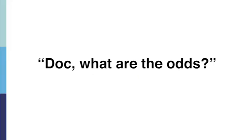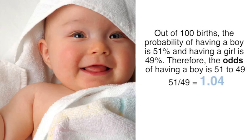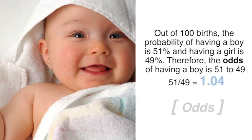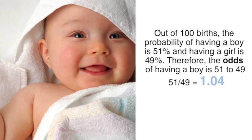You might have also heard of the term odds before. For example, you might ask the doctor: what are the odds of having a baby boy? Out of 100 births, the probability of having a boy is 51%, while the probability of having a girl is 49%. So the odds of having a boy is 51 to 49. Dividing 51 by 49, you get the odds of 1.04.